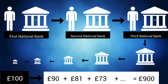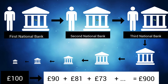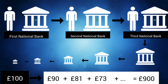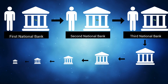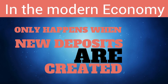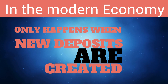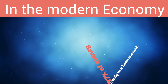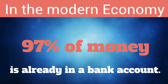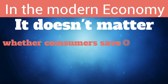This process seems quite neat. When someone decides to save their money in a bank, the money can be used to create loans. In some textbooks, banks are described as intermediaries who turn savings into loans. But of course, this only happens when cash is deposited in a bank account. In reality, cash makes up a very small amount of the money in the economy, and in fact 97% of money is already in a bank account.